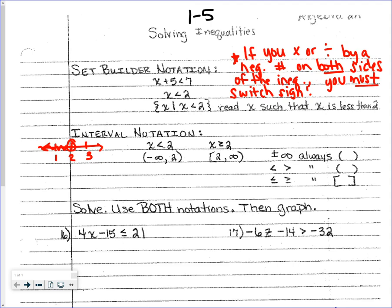Just like an open circle and a closed circle, we have rules for interval notation. If it's less than or greater than, it's an open circle on the number line. If it's less than or equal to or greater than or equal to, it's a closed circle. Open circle means not including, closed means including. Similarly, infinity always gets a parenthesis because you can't be on infinity. A closed circle — meaning including the number — gets a bracket.